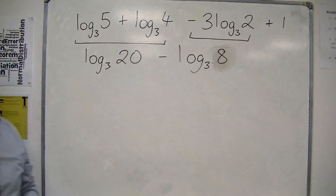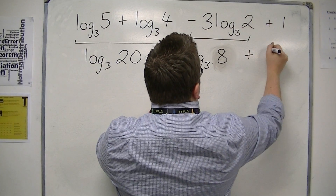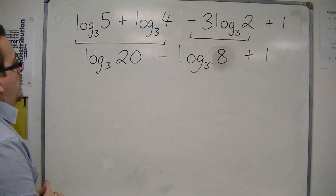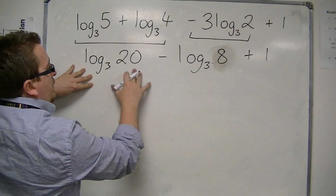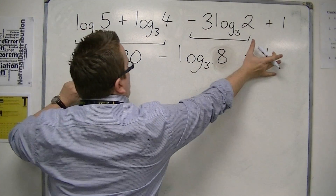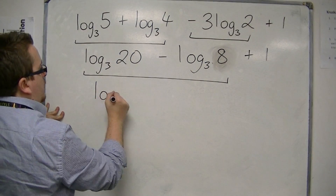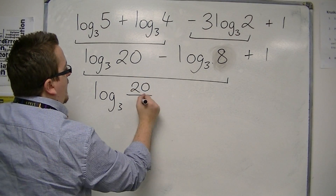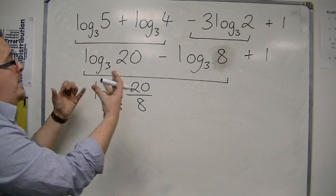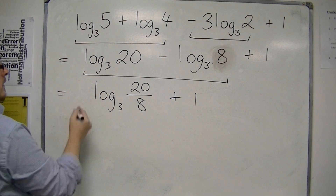And then I've got this plus 1 on the end, which I'm going to leave there for the moment. First of all, I'm going to look at log base 3 of 20 take away log base 3 of 8. Considering just those two terms and ignoring the 1 for the moment, that is the same as log base 3 of 20 over 8, because subtraction means division when I've got logs of the same base. And I've still got that plus 1 on the end.